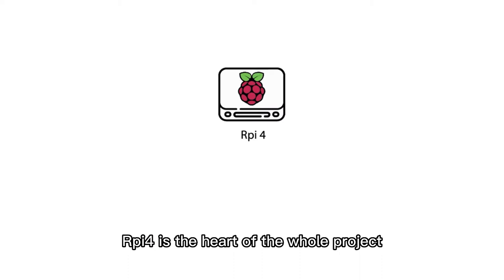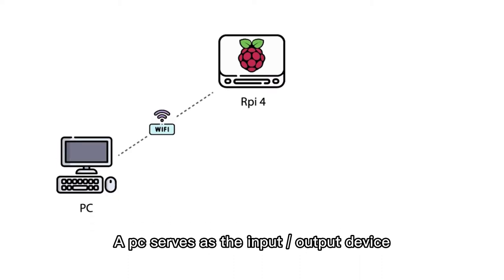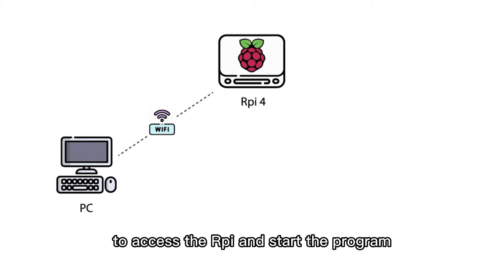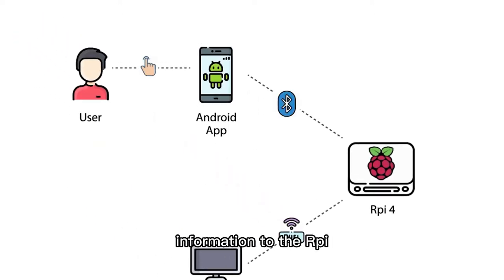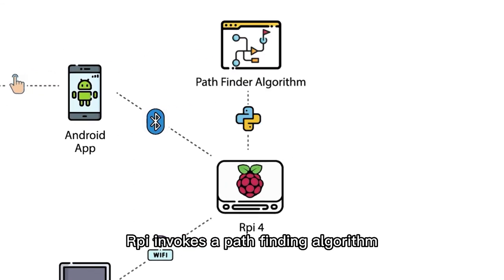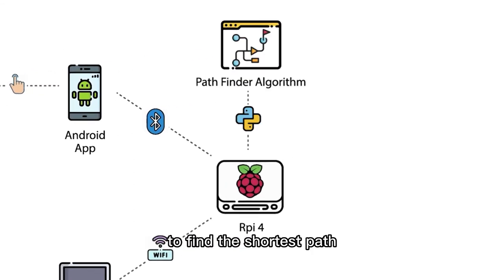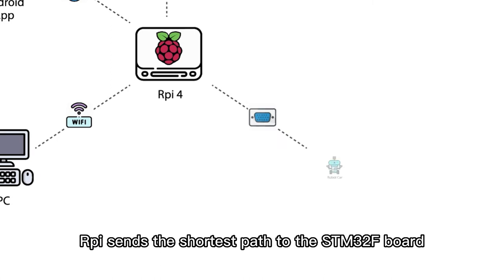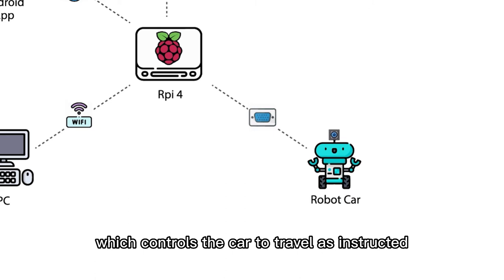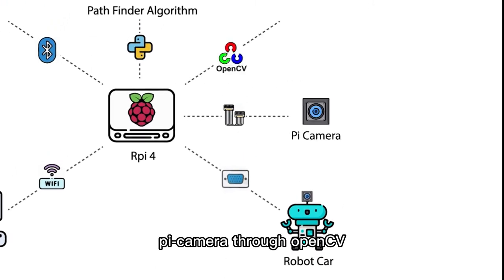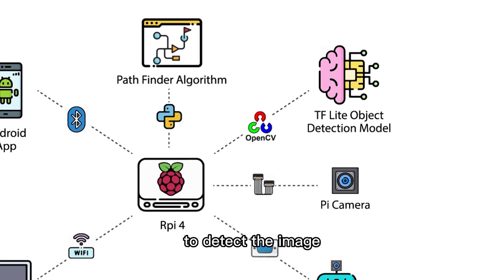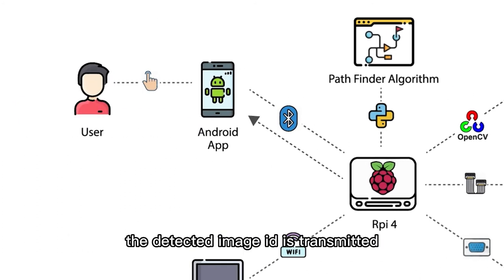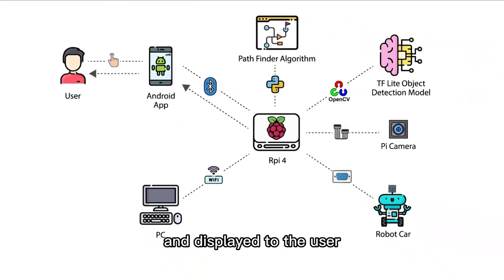The RPi 4 is the heart of the whole project. A PC serves as the input-output device to access the RPi and start the program. The end user uses the Android app to send obstacle information to the RPi. The RPi invokes a path-finding algorithm to find the shortest path, then sends it to the STM32F board which controls the car to travel as instructed. The RPi activates the camera through OpenCV and uses a TensorFlow Lite object detection model to detect the image, and the detected image ID is transmitted back to the Android app and displayed to the user.